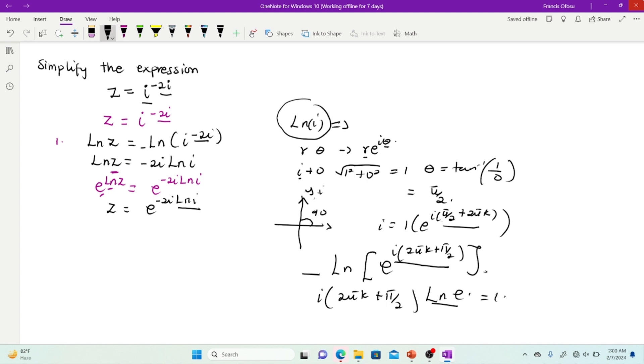to make substitution of this expression here. So from this side, z is equal to e to the power negative 2i multiplying. Now ln i has been simplified to this expression. Because this is 1. So I open brackets 2πk plus π on 2.